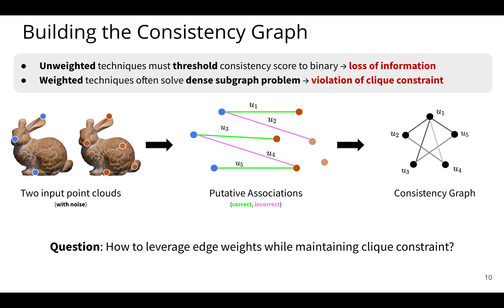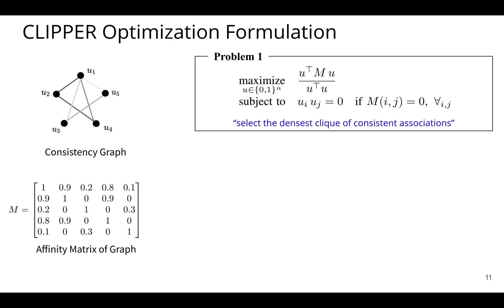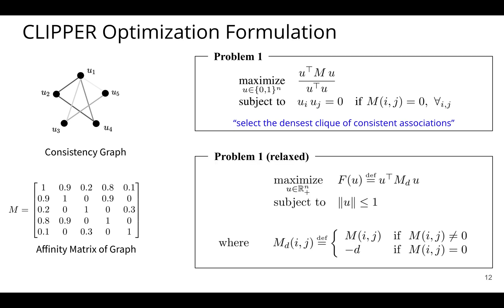So then our question is, how do we leverage edge weights while still maintaining this clique constraint? And here's a mathematical formulation of that statement. The objective here is over this Rayleigh quotient-like objective is over the binary domain and that encodes the density of the subgraph. And it's subject to this clique constraint here. And so in English, this is to select the densest clique of consistent associations. And as we've talked about, this being over the binary domain is an NP-hard problem.